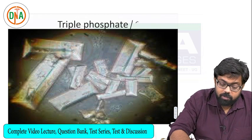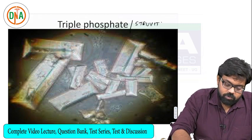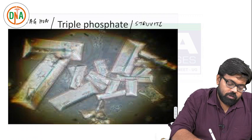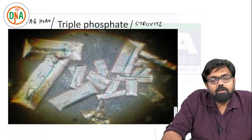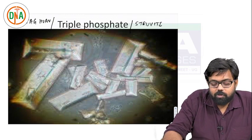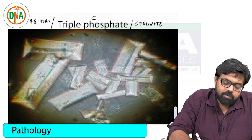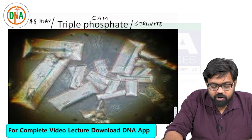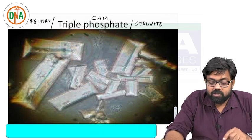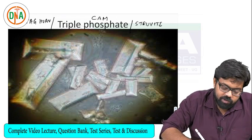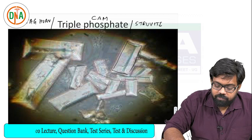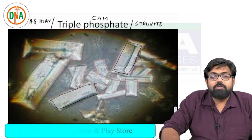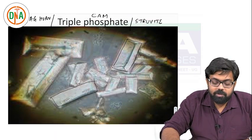The next is triple phosphate, also called struvite stone, also called staghorn calculi. An easy way to remember the three phosphates in triple phosphate is the mnemonic CAM: Calcium, Ammonium, Magnesium phosphate. The crystal has a coffin lid or coffin box appearance. This is all about triple phosphate, struvite stone, or staghorn stone, which has a coffin lid appearance.